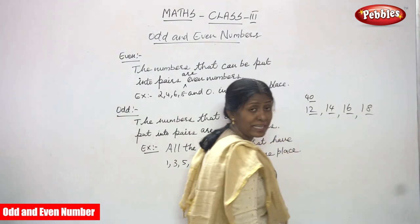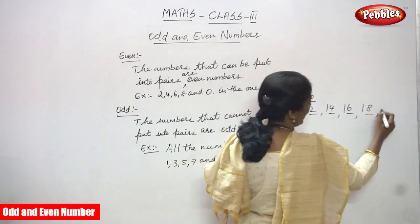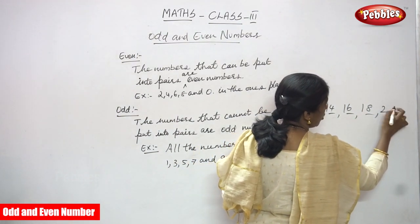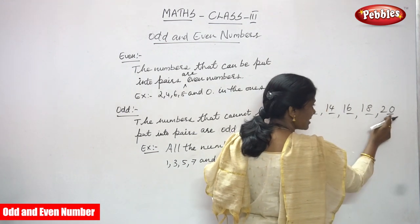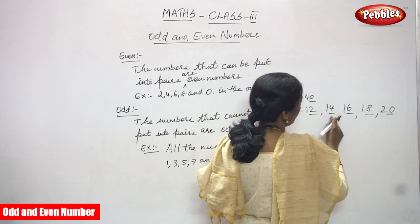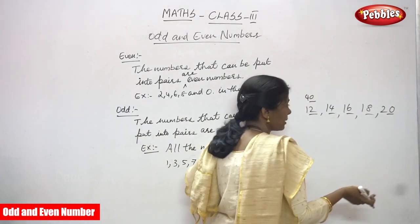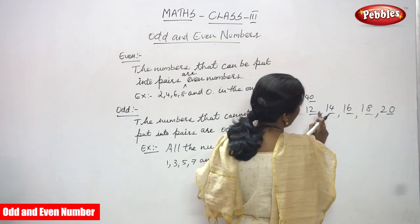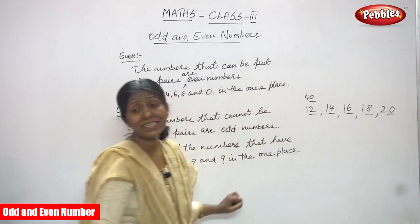For example, 20 — look at the ones digit, which is zero. So the number ends with zero. Two, four, six, eight, zero — whatever the number may be, if the ones digit is 2, 4, 6, 8, or 0, that number is called an even number.